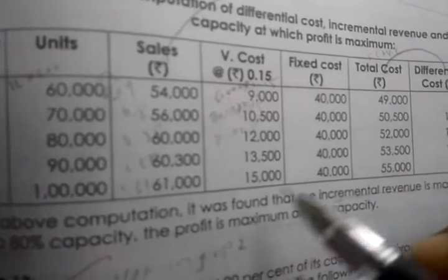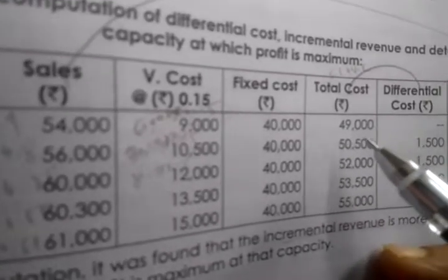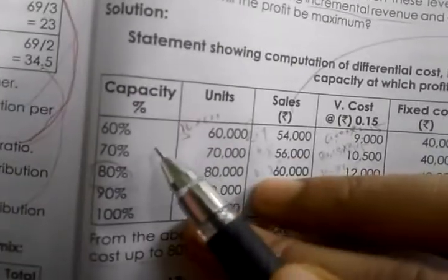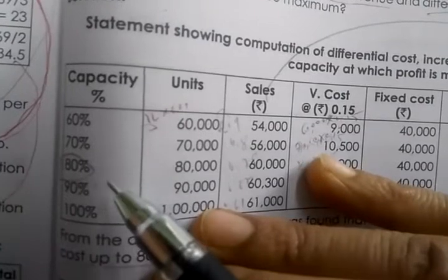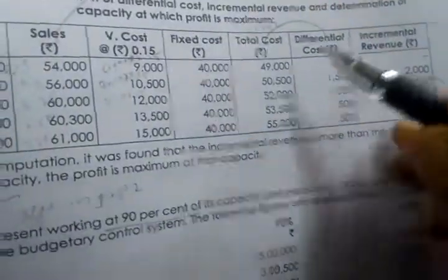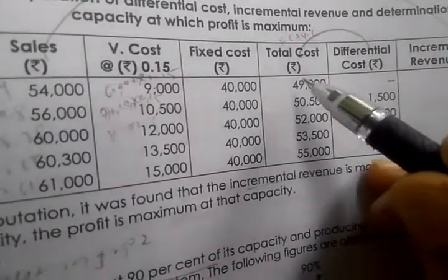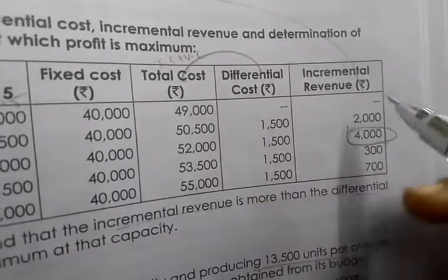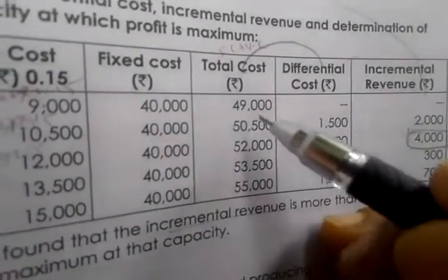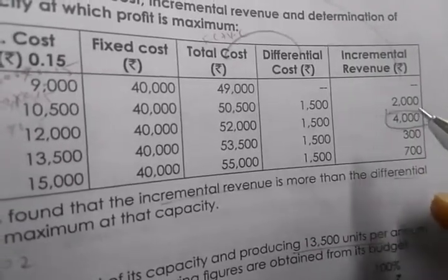Now calculate 'Differential Cost' — the difference between successive total costs. Leave the first column blank. Then: 70% minus 60% capacity total cost; 80% minus 70%; 90% minus 80%; 100% minus 90%. For example: ₹55,000 − ₹53,500 = ₹1,500; ₹52,000 − ₹50,500 = ₹1,500. Keep in mind: differential cost is the difference between total costs at consecutive capacity levels.